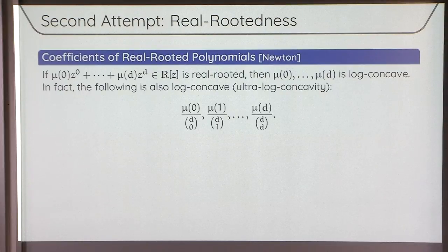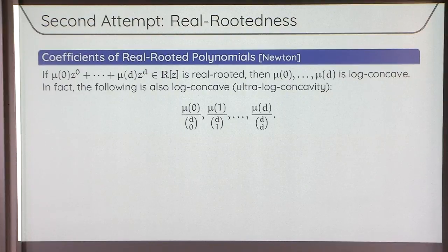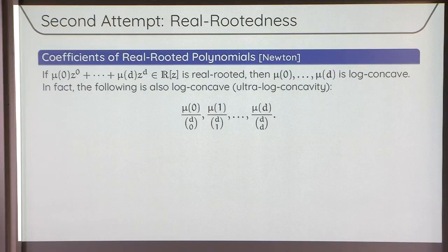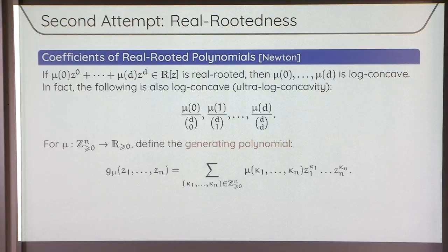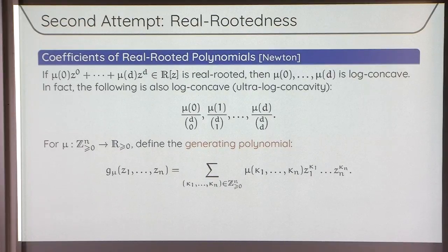Here is an approach. Newton knew a set of inequalities — now called Newton's inequalities — stating that if you put a sequence of numbers as coefficients of a polynomial and the polynomial turns out to be real-rooted, then the coefficients are log-concave. Moreover, the coefficients divided by the binomial coefficients are also log-concave — this is called ultra-log-concavity. Fortunately, real rootedness generalizes to higher dimensions. We've already discussed this: the analog of real-rooted polynomials in the multivariate setting are real stable polynomials.